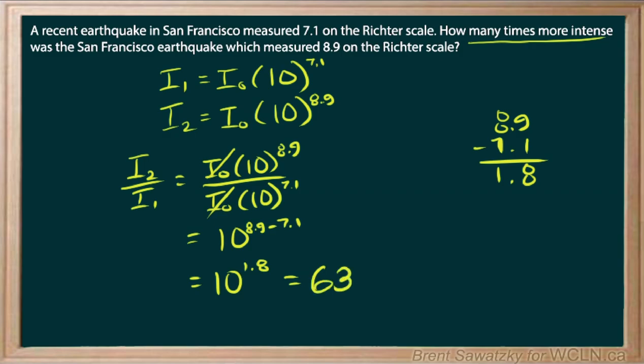So our answer is that the second earthquake is 63 times more intense than the first earthquake. And that's that.